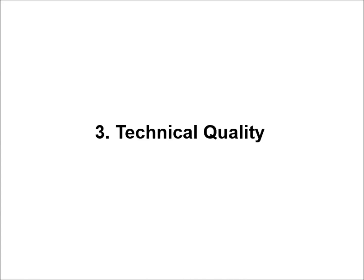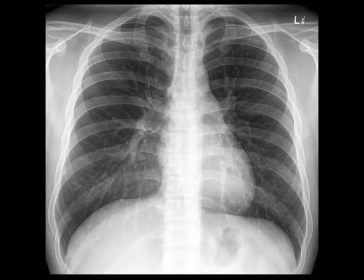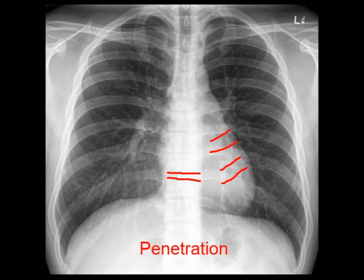Step three: check if the film is technically adequate. A useful mnemonic to remember the three aspects of technical quality is RIP — Rotation, Inspiration, Penetration. To check rotation, look at the clavicular heads and spinous processes; if the spinous processes are halfway between the clavicular heads, the patient is not rotated. Next, check for adequate inspiration by looking at the mid-clavicular line and seeing which anterior rib intersects the diaphragm — it should normally be the 5th, 6th or 7th. More ribs means the lungs are hyperinflated, often seen in COPD. Fewer ribs means the patient may not have taken a full breath.